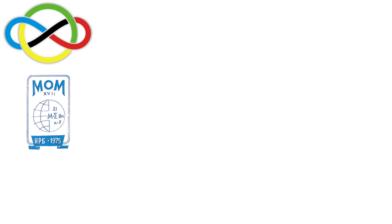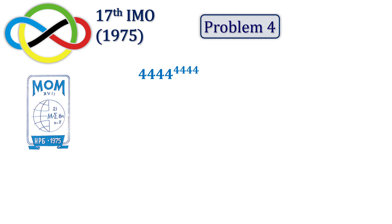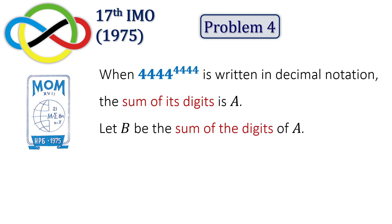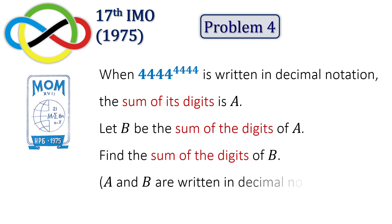Imagine facing a number so gigantic it's almost beyond comprehension: 4,444 raised to the power of 4,444. This is problem four from the 1975 International Mathematical Olympiad. The problem states: when 4,444 raised to the power of 4,444 is written in decimal notation, the sum of its digits is A. Let B be the sum of the digits of A. Find the sum of the digits of B, where A and B are written in decimal notation.